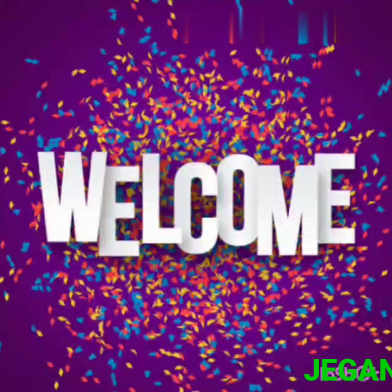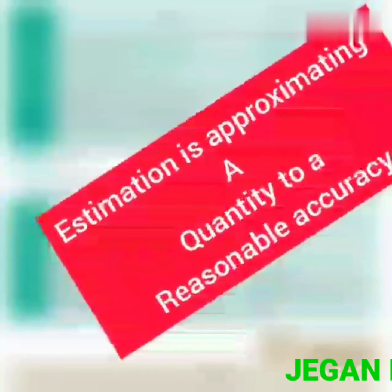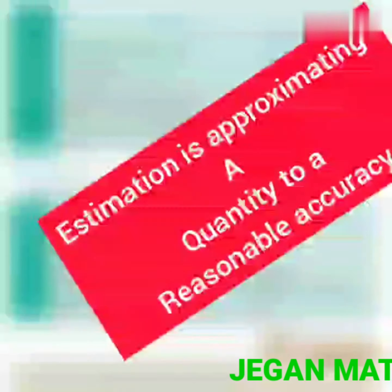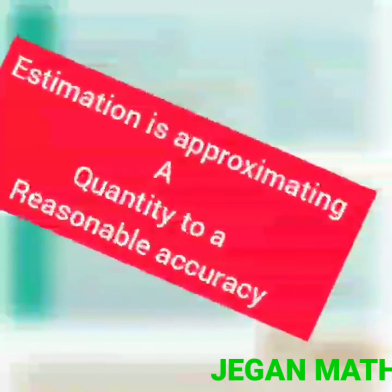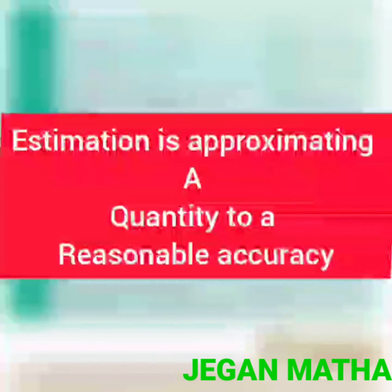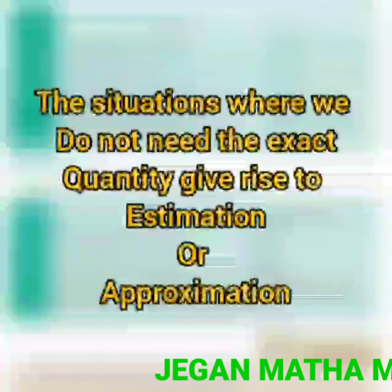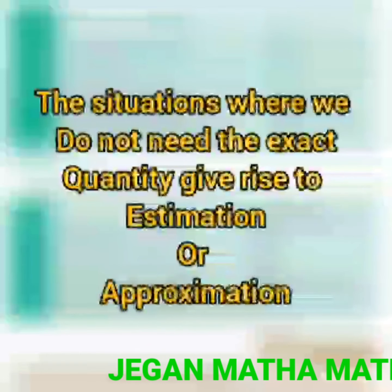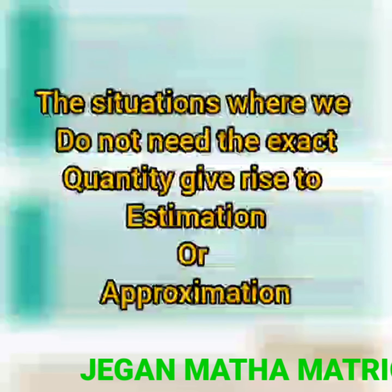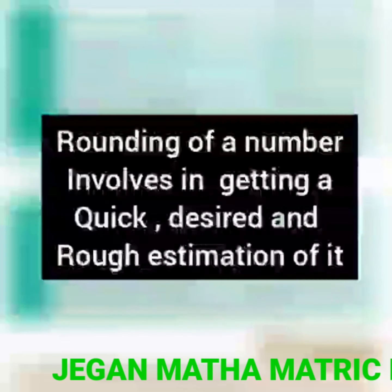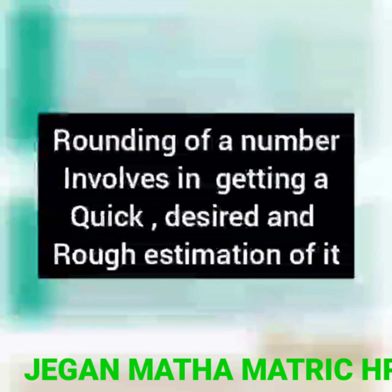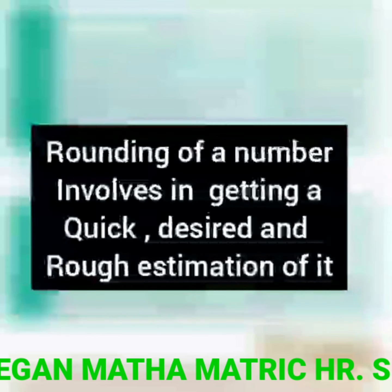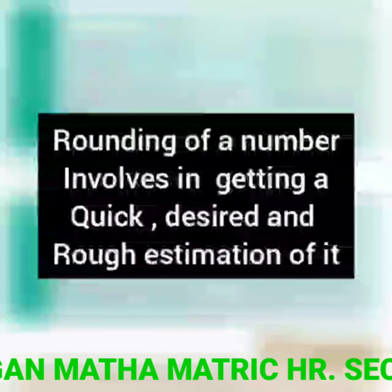Good morning students. Today we are going to learn about the estimation of numbers. Estimation is approximating a quantity to a reasonable accuracy. The situations where we do not need the exact quantity give rise to estimation or approximation. Rounding of a number involves getting a quick, desired, and rough estimate of it. Now let us see the example sums.